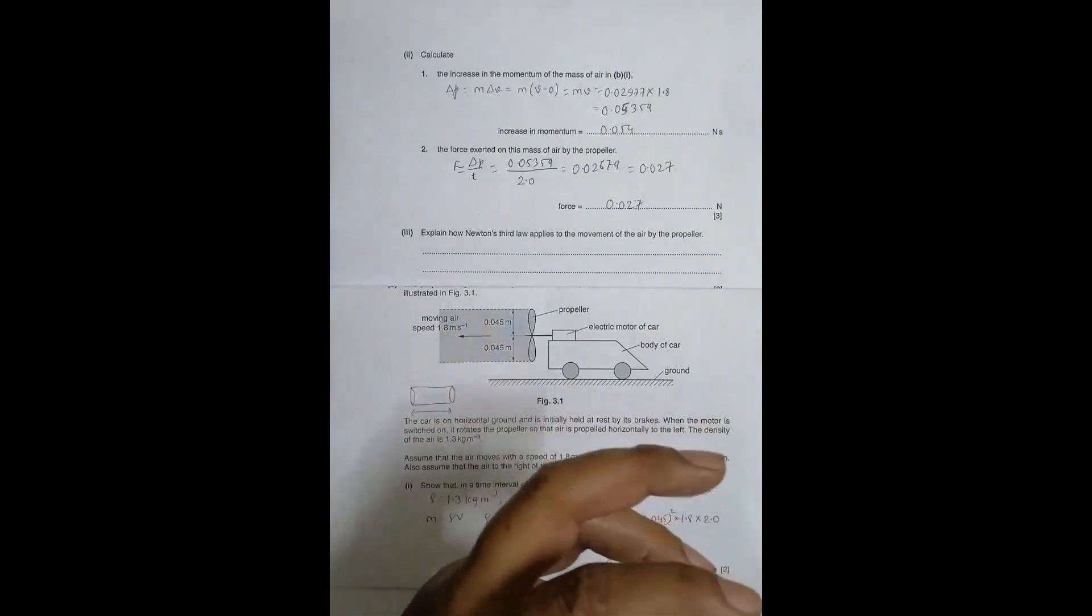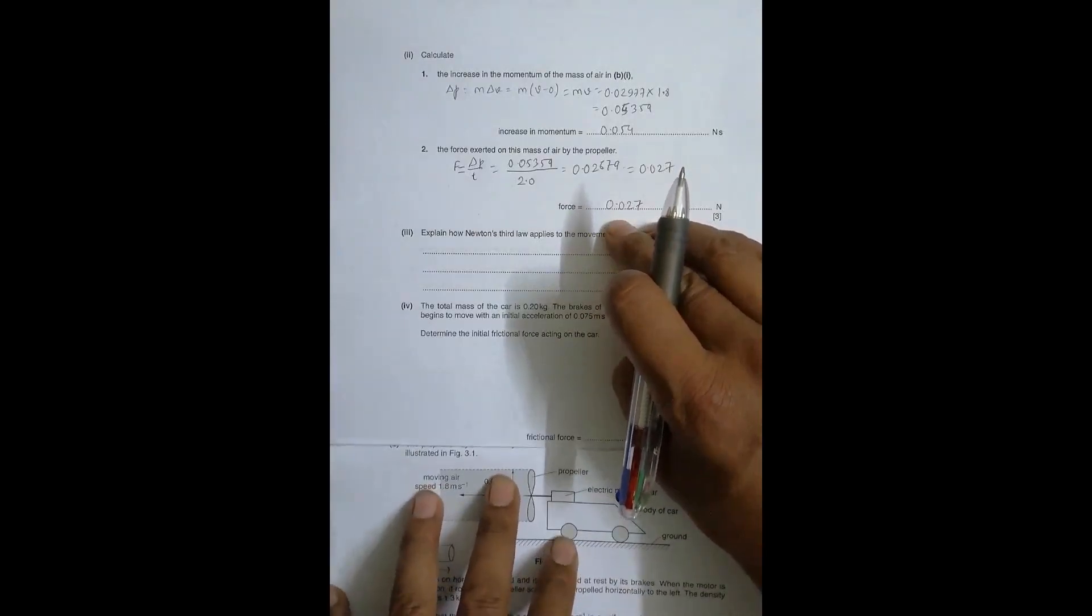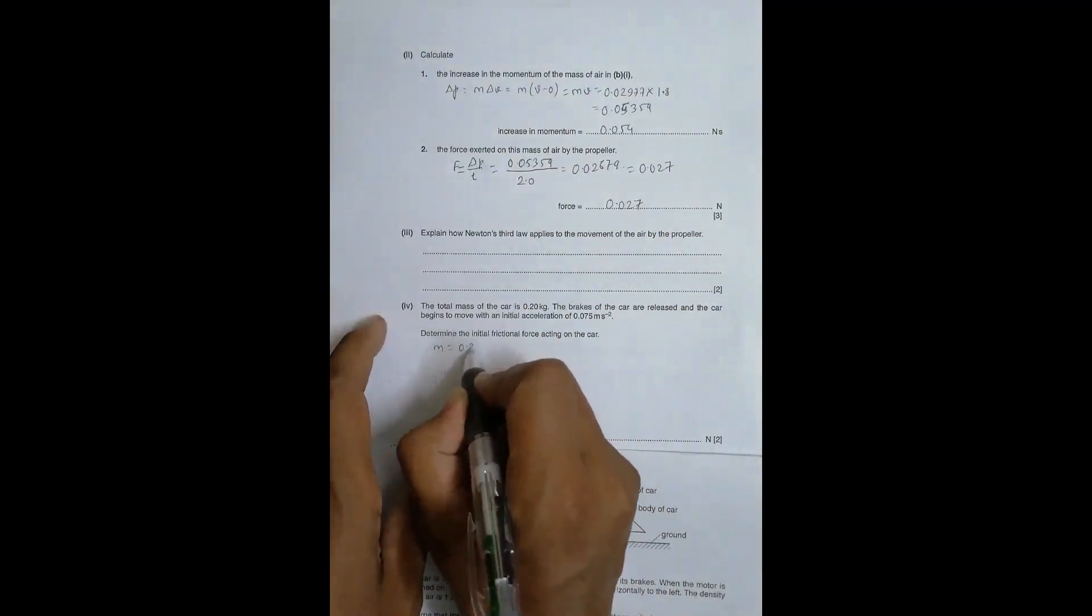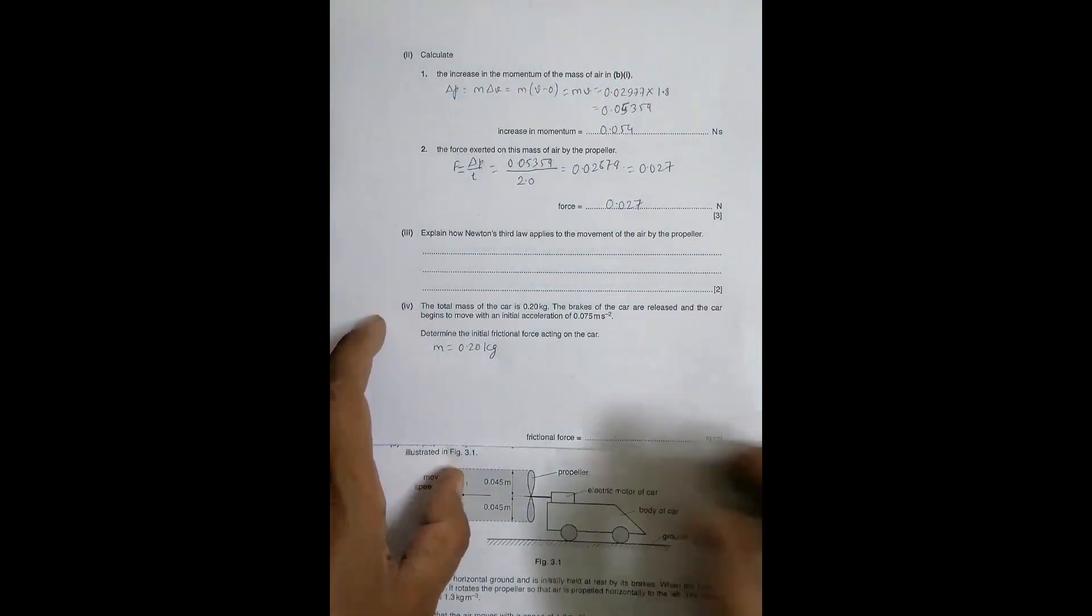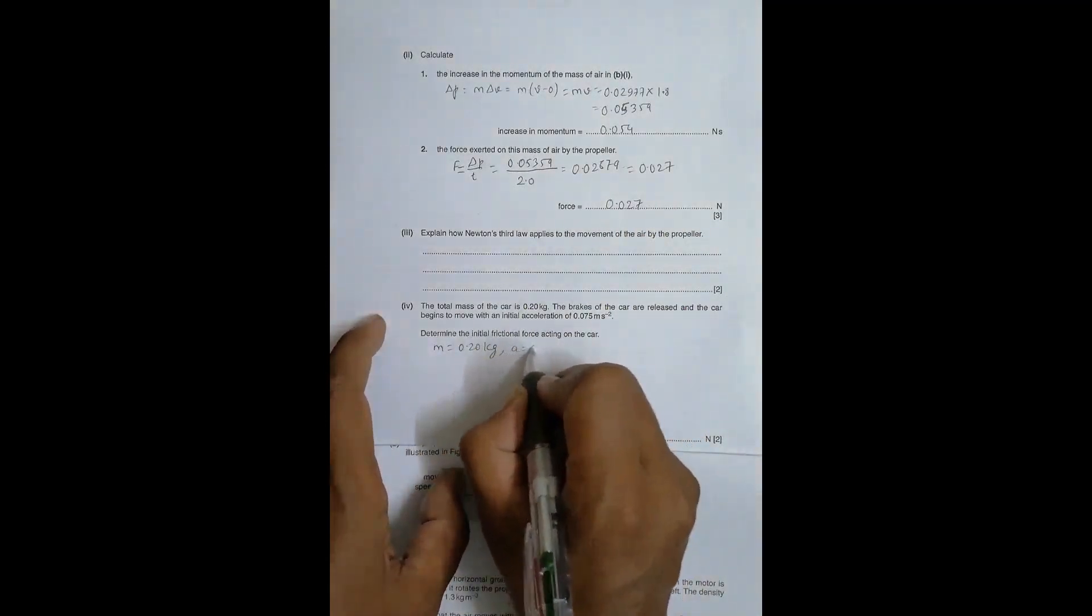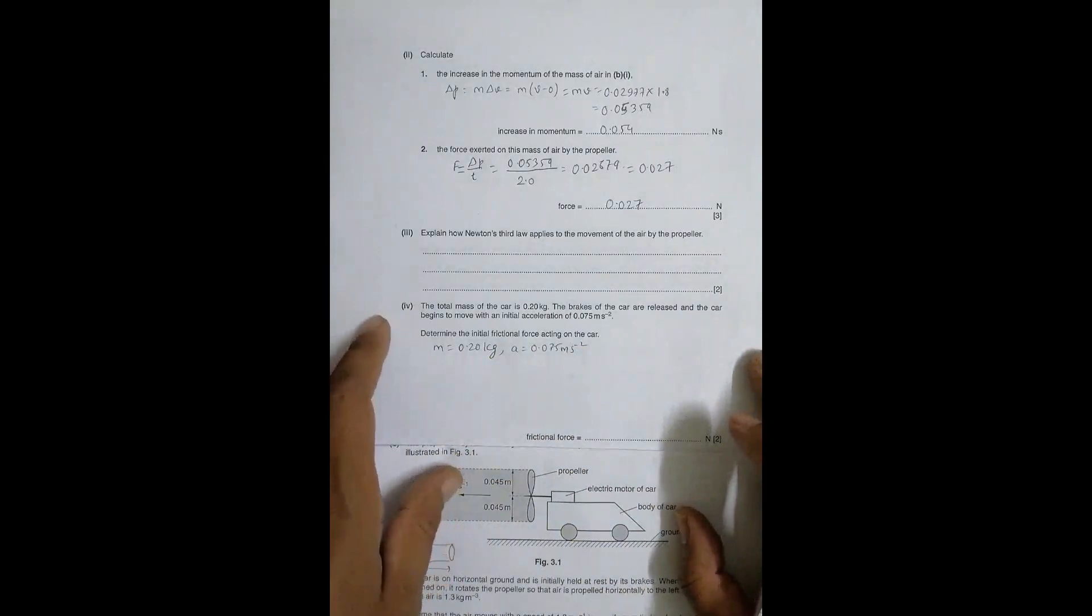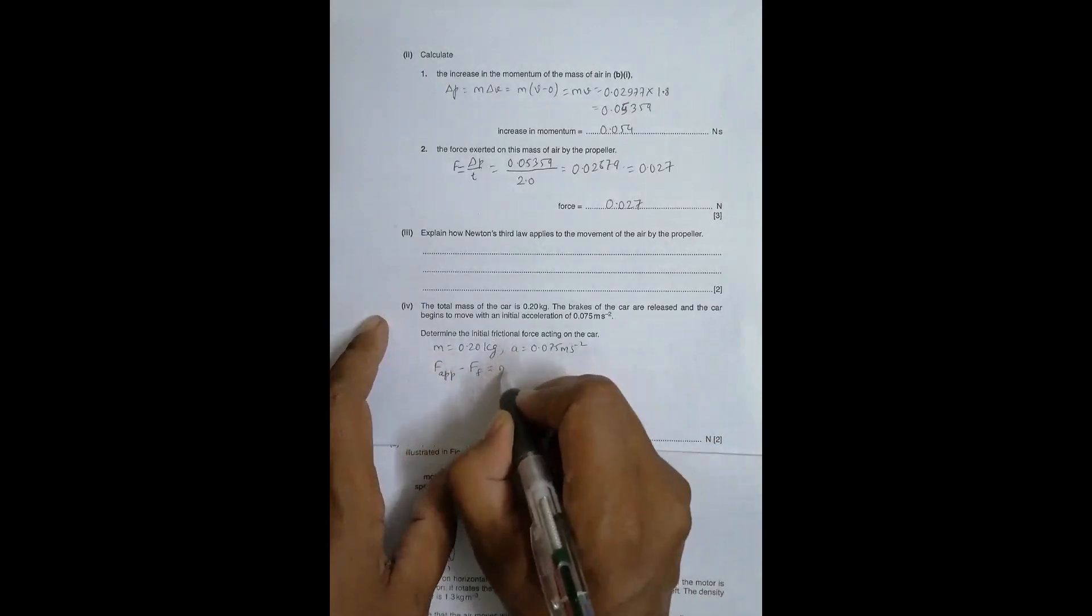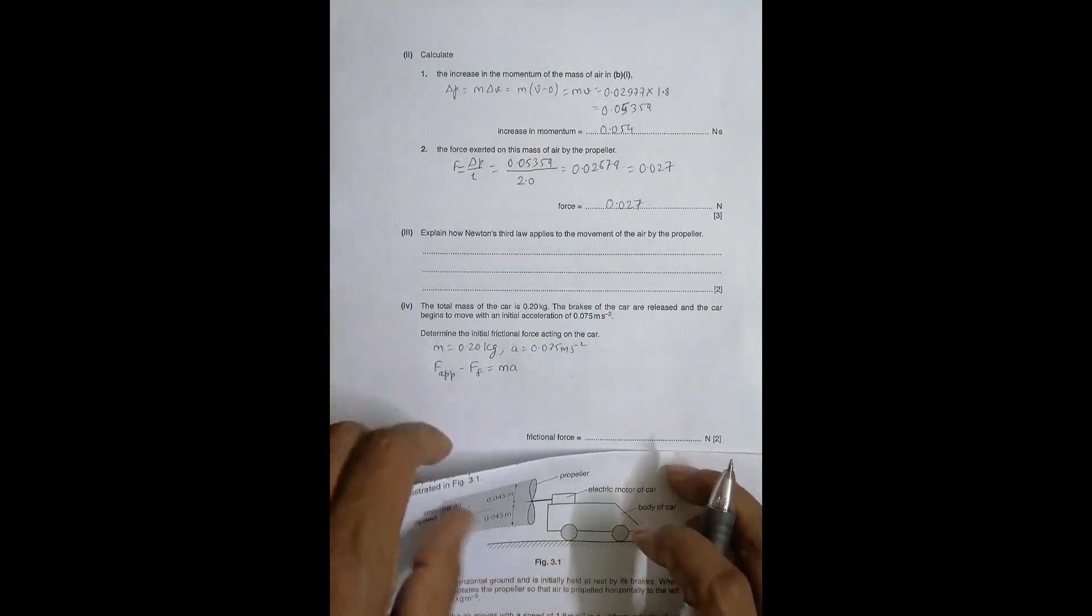Now in number four, the total mass of the car is 0.20 kg. The brakes of the car are released and the car begins to move with an initial acceleration of 0.075 meter per second squared. We have to find the friction force. The forward moving force, which is applied force minus frictional force, should be equal to mass into a.